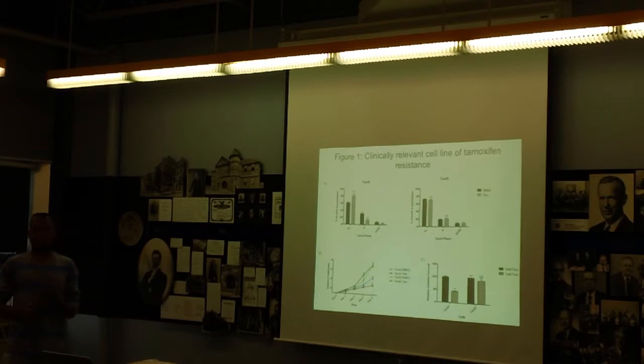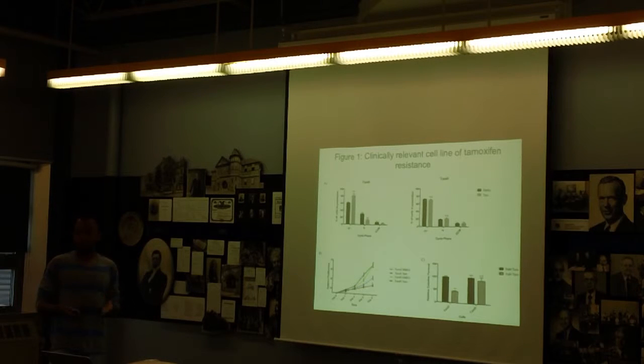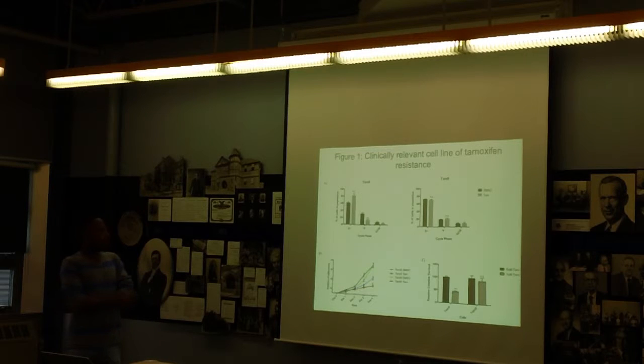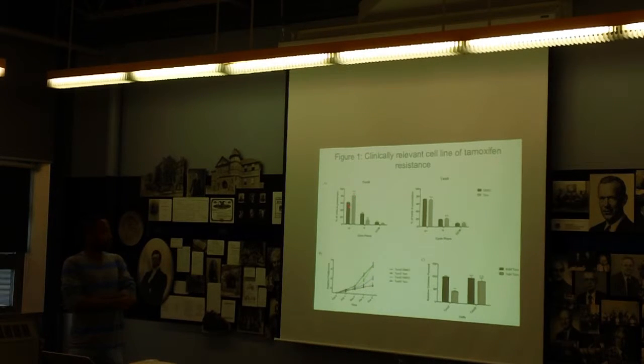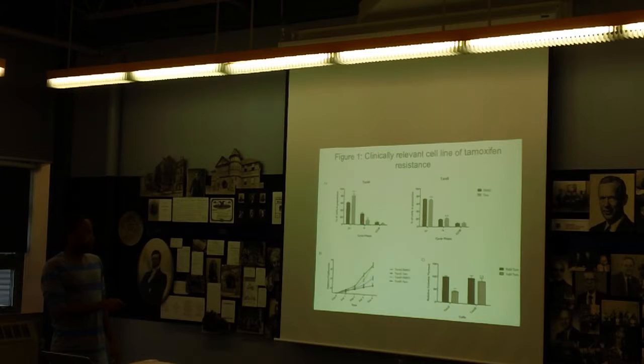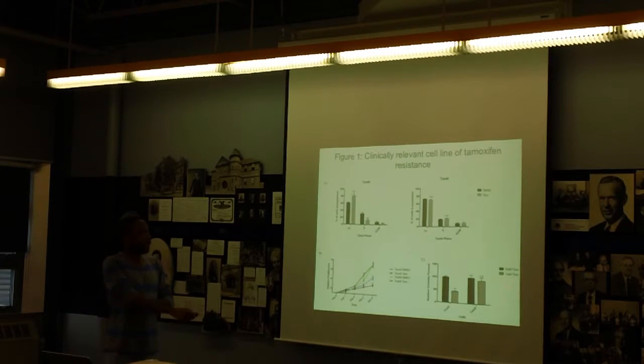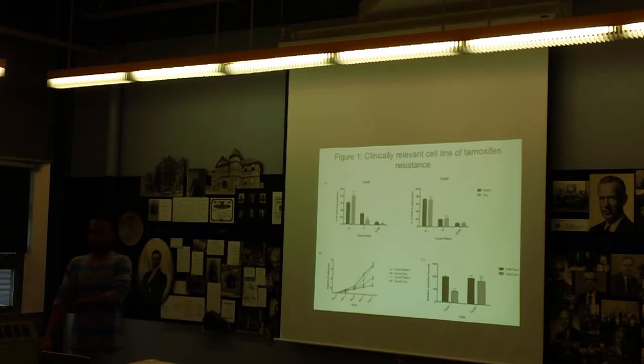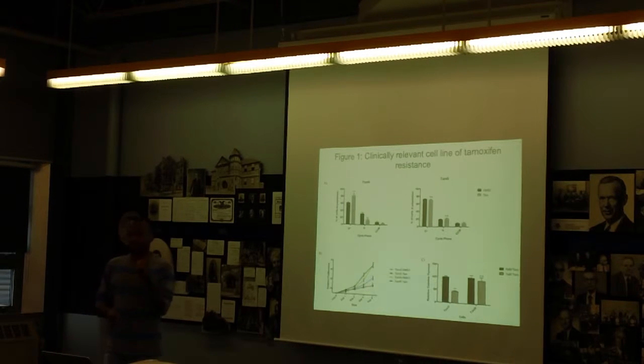So the first thing you want to do any time you have a model is you want to test your model to make sure it works. And so tamoxifen, what it generally does, it accumulates cells, sensitive cells, into G1. And so when I treat with this drug for 72 hours, we see a significant increase of the sensitive cells into G1, which means it's stalling the cell cycle. It's fundamentally causing the cells to fail their G1-S checkpoint and accumulates them into G1. You see a drop out of S phase, and you can see a decrease in the G2-M phase. But in the resistant cells, this is not the case. You also see differences in proliferation over time and a decrease in colony formation.